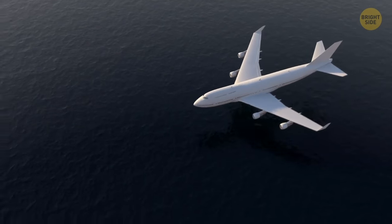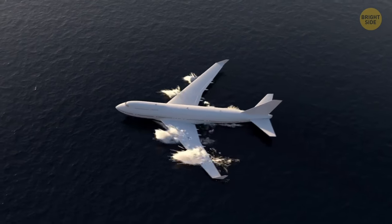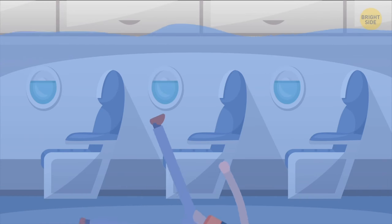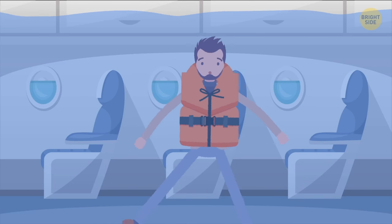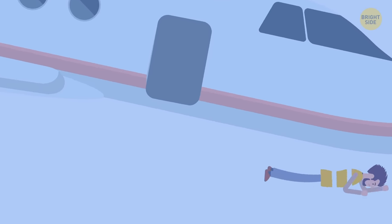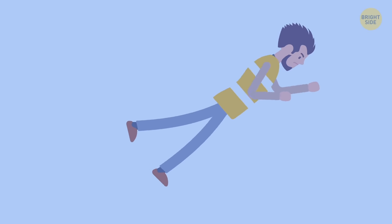In case of emergency water landing, don't inflate your life jacket before getting out of the plane. You'll end up not being able to move without help, since you'll float up to the cabin ceiling. The safest thing to do is take a deep breath and swim out of the airplane, taking your deflated life jacket with you. Only when you're out of the plane, you can finally pull the inflation cord.